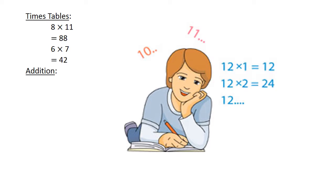Addition. 65 plus 49 is equal to 114. Subtraction. 57 minus 29 is equal to 28.